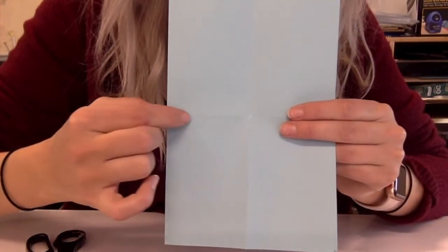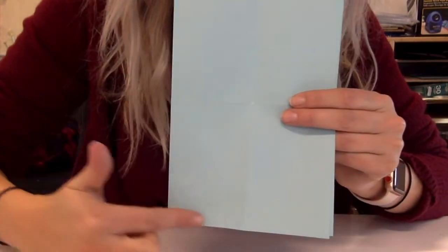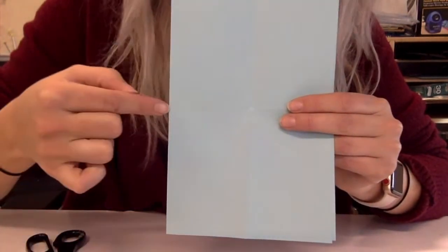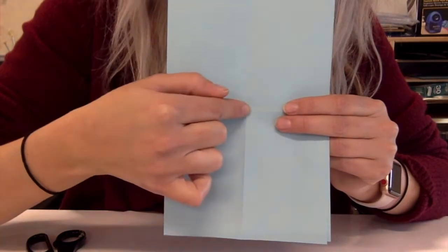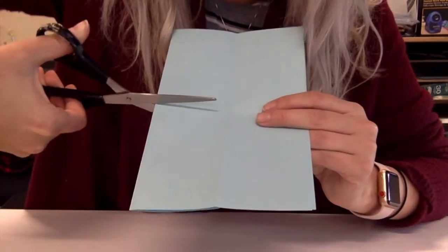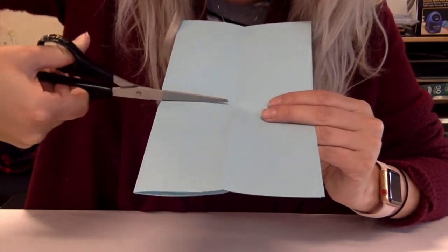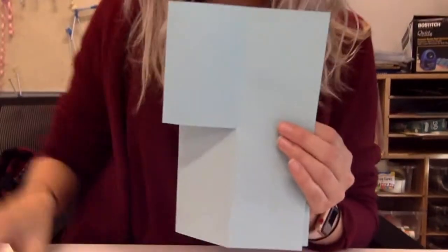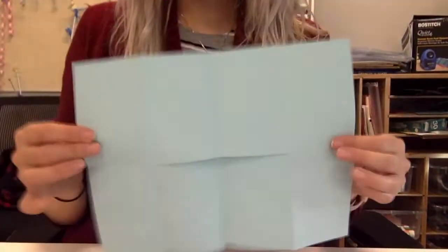You're going to cut across the top of this rectangle. You're gonna cut across and then stop when you get to the middle section. It's really important you do it on the folded side, or else this won't work.